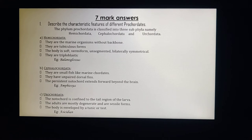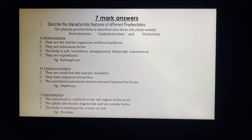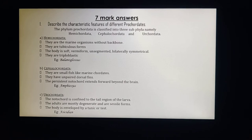Seven-mark question: describe the characteristic features of different procordates. Procordates are divided into three subphyla: Hemicordata, Cephalocordata, and Urocordata. Examples: Hemicordata — Balanoglossus; Cephalocordata — Amphioxus; Urocordata — Ascidians.